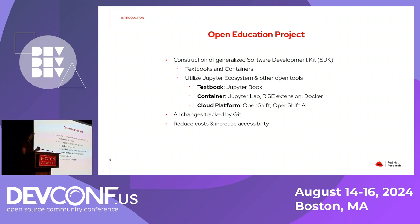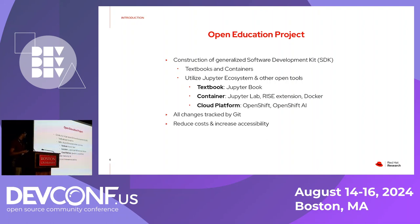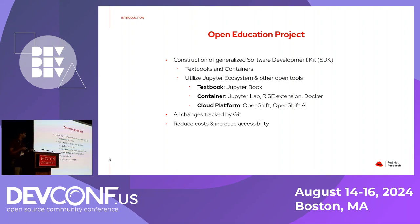For the platform we deploy on OpenShift and OpenShift AI. With the open education project, all changes to the textbooks and the containers are tracked by Git and hosted in a repository. This is very powerful because it allows authors of these textbooks to collaborate with each other, and it allows a history of changes made to the textbook to be seen. The student can actually go into that repository and see the source material for the textbooks and open issues or pull requests to make changes. Professor Jonathan Apavu and Ron Krieger actually offered extra credit to students who opened issues or pull requests to their textbooks.